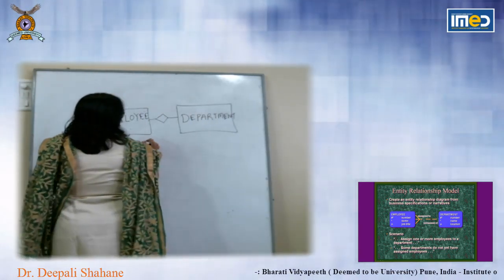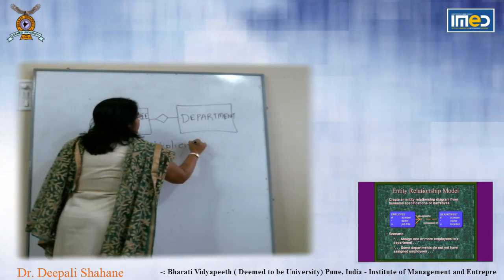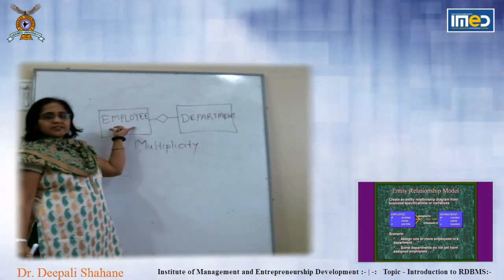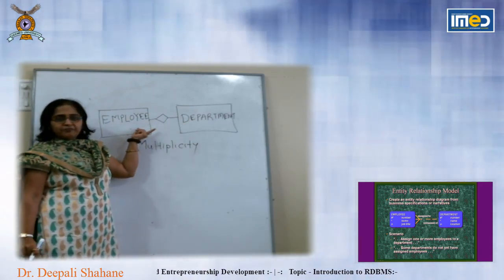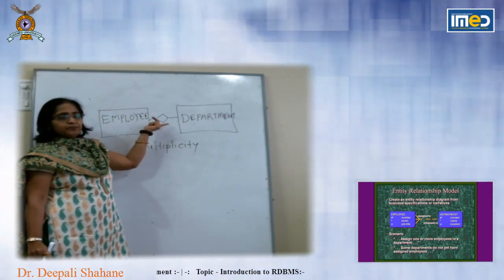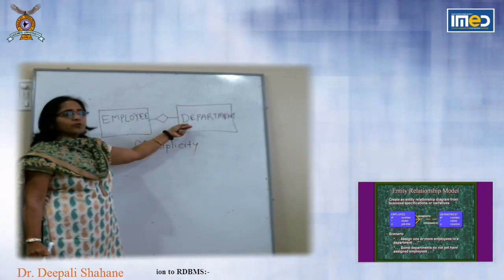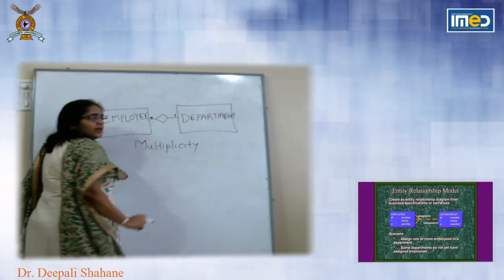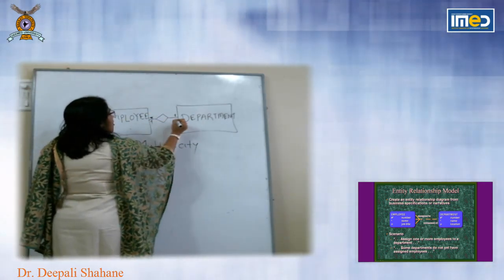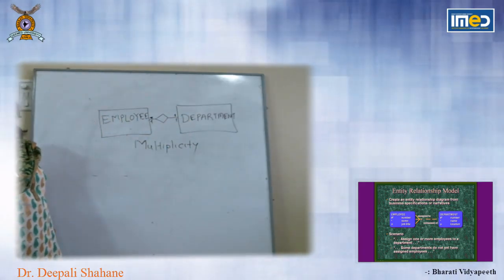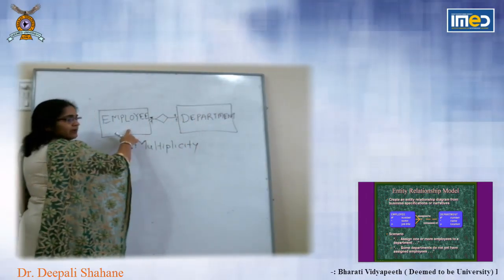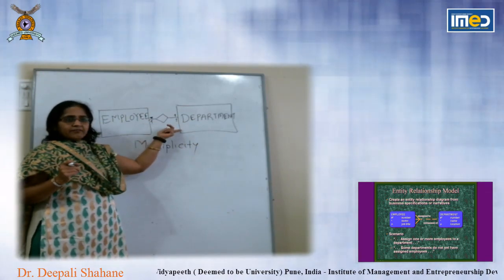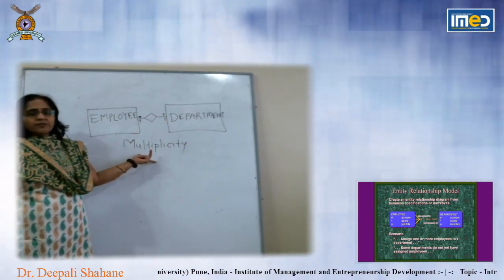There is one more concept called multiplicity. This particular multiplicity talks about how many different instances of every entity are reflected when we are talking about relations — for example, how many employees are connected to a department. At one point in time there are many employees working in one department, and one employee is always working in one department only. So for one department there are many employees, and one employee works in one department. This quantity of how they are connected is called the multiplicity of the entities.